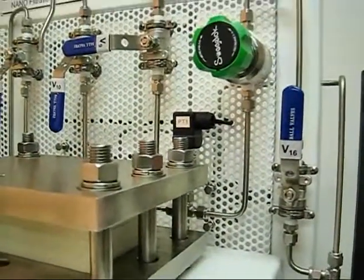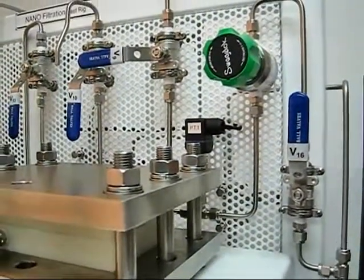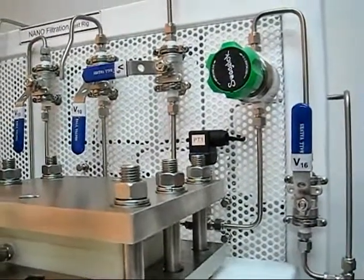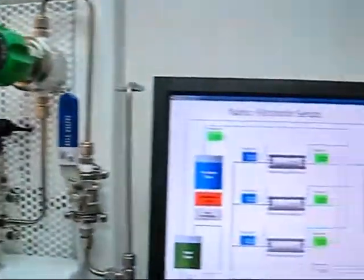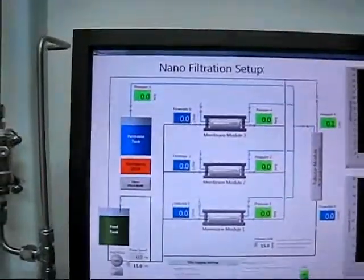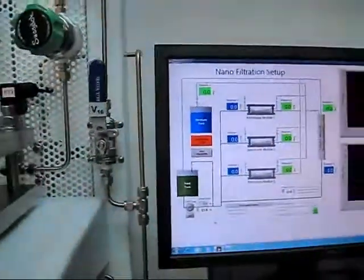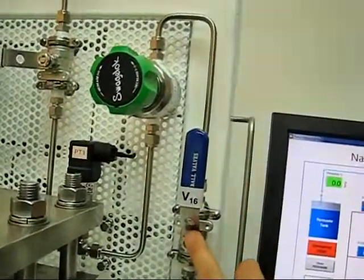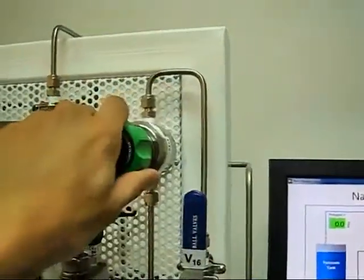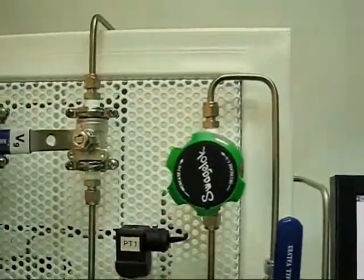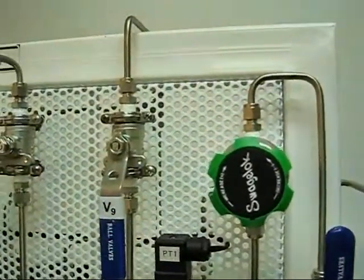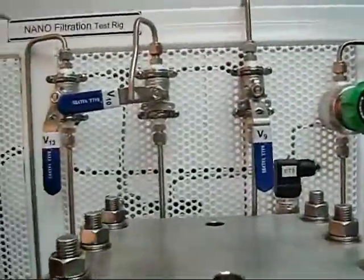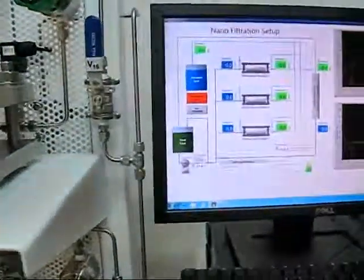As we're planning our next experiment with a higher flow rate, maybe 8.5 liters per minute with a back pressure of 10 bar, I've reset this valve over here to fully open. We can either shut this and open this, or the other way around. The feed bar is now fully open.